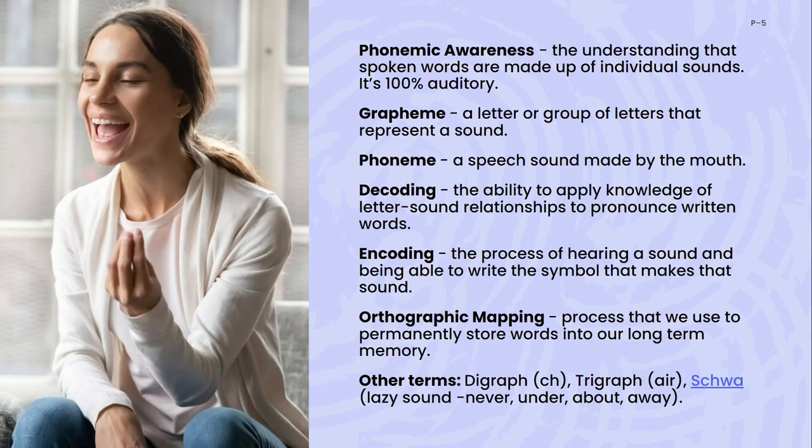Decoding is the ability to apply knowledge of letter-sound relationships to pronounce written words — being able to decode words when we read. Encoding is the process of hearing a sound and being able to write that symbol: hearing a word, breaking it into sounds, and writing it in the correct formation.